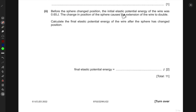Now, before the sphere changed position, the initial elastic potential energy of the wire was 0.65 Joules. The change in the position of the sphere causes the extension of the wire to double. So when this change in position happens, the extension of the wire doubles. Calculate the final elastic potential energy of the wire after the sphere has changed position. So when it changes position, the extension doubles.